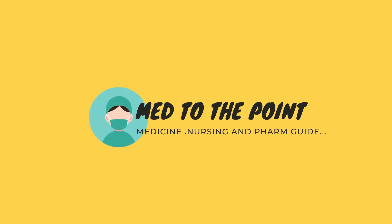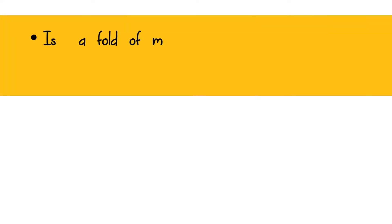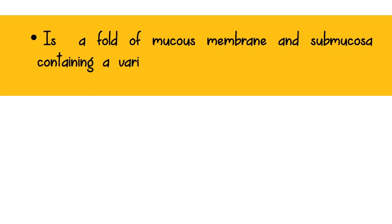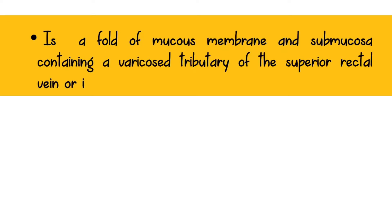Let's see what a hemorrhoid is. A hemorrhoid is a fold of mucous membrane and submucosa containing a varicose tributary of the superior rectal vein or inferior rectal vein tributaries.